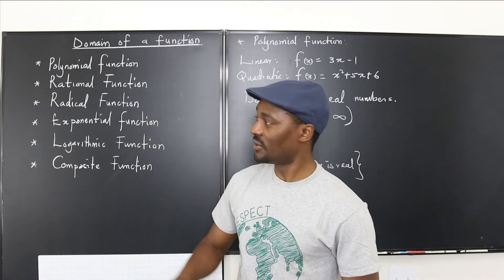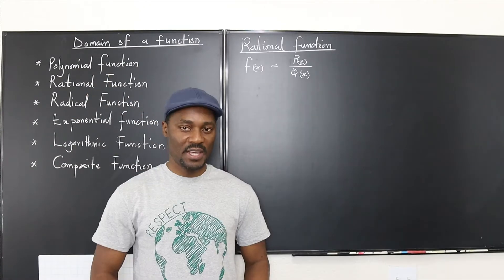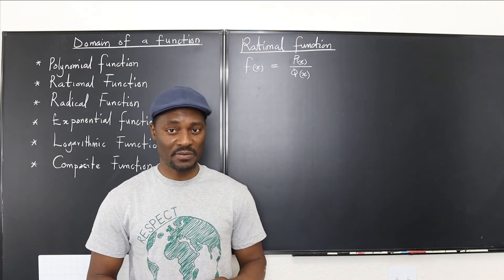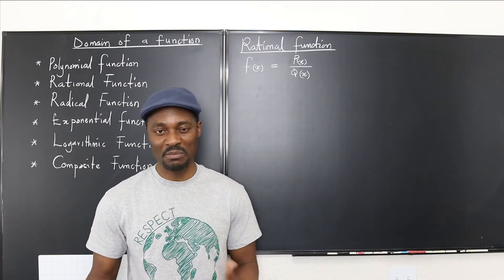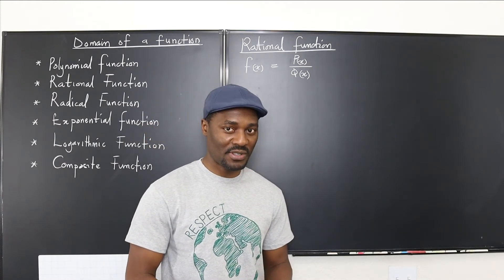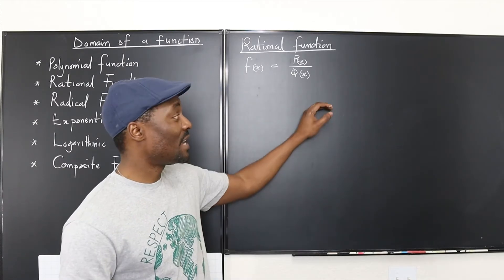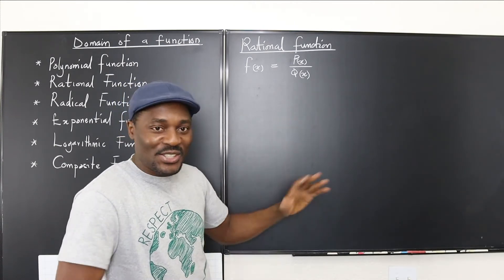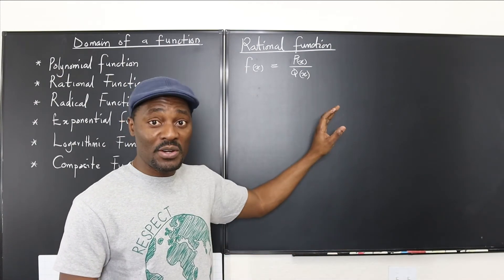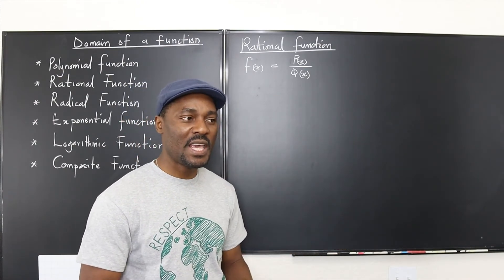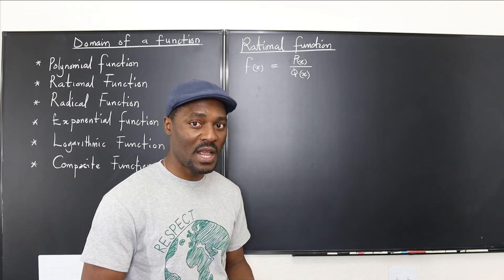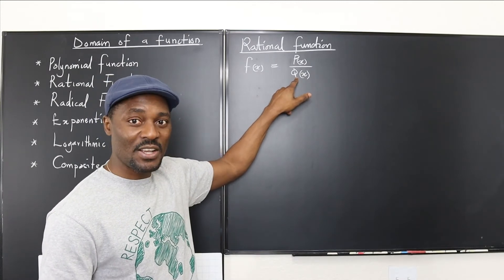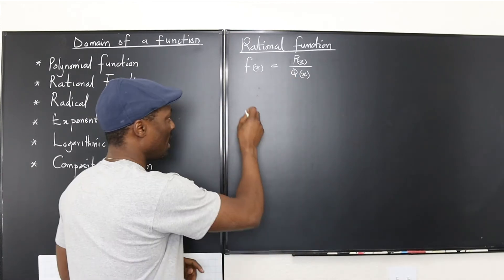Let's go to the next kind of function: rational functions. A rational function is the situation you have when you divide one polynomial by another polynomial. The domain of any polynomial is all real numbers, so the only thing we're trying to avoid is generating an answer that's not real — and the only time that happens is when the bottom polynomial gives you zero. So let's take an example.